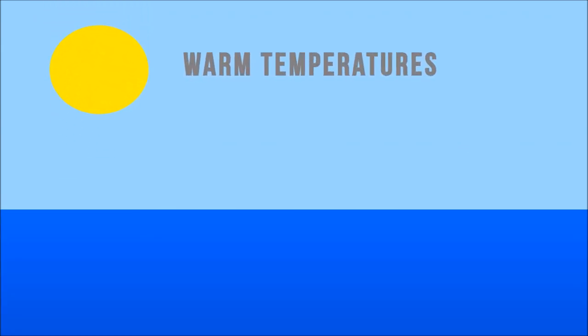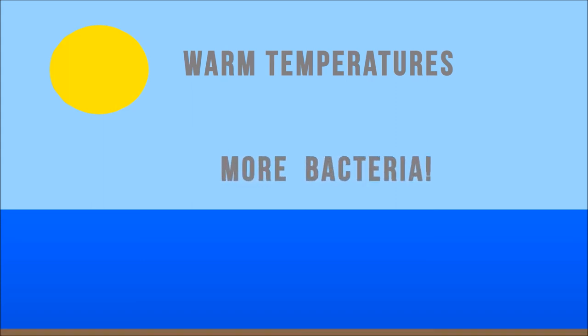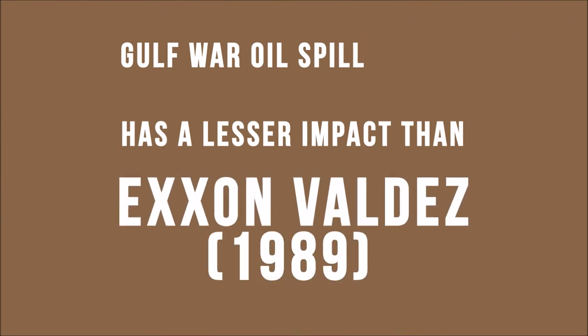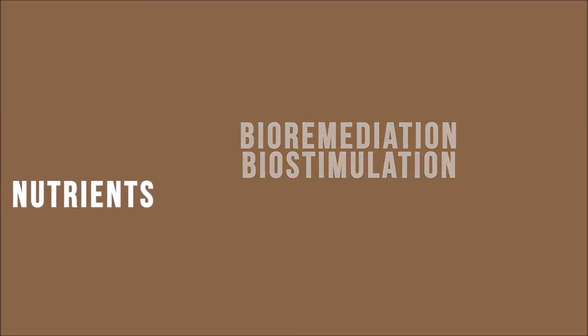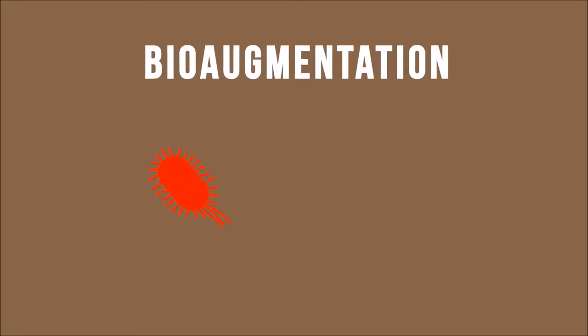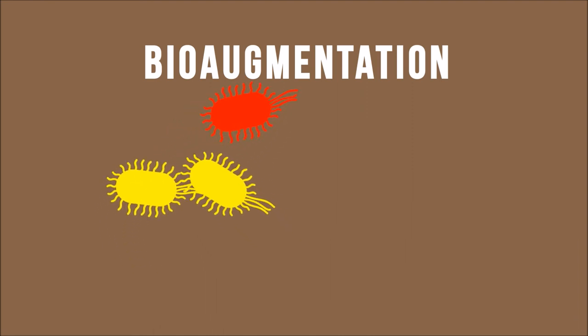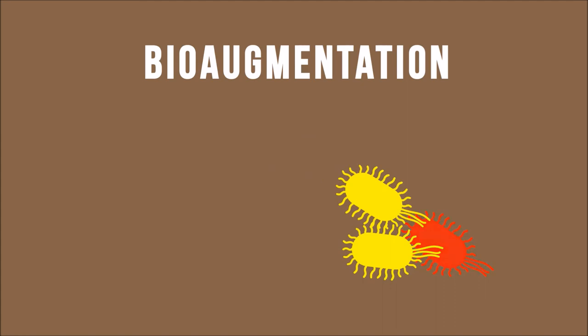Another factor working in favor of the bioremediation of the Persian Gulf is the climate. The temperatures in the Middle East are generally very warm, which helps the bacteria thrive. This is one of the main reasons why the Gulf War oil spill had a lesser impact than the Exxon Valdez, since in colder climates the bacteria metabolize the hydrocarbons much slower. The method used to speed up the bioremediation process was biostimulation, as adding nutrients to the environment was less harmful than bioaugmentation, which involved introducing a new species of bacteria. This would induce competition among the various species, and the new species are much less adapted to the conditions compared to the native species.